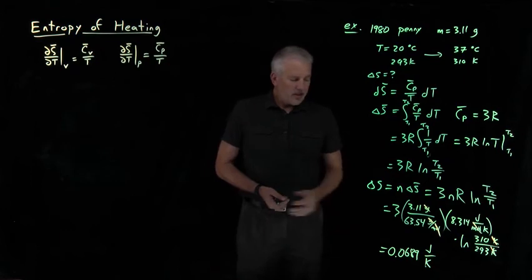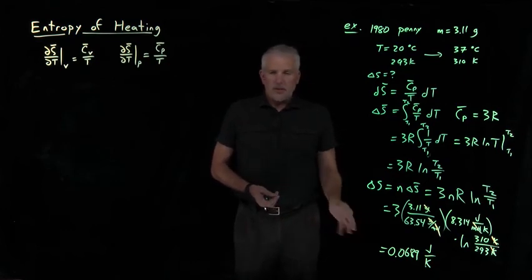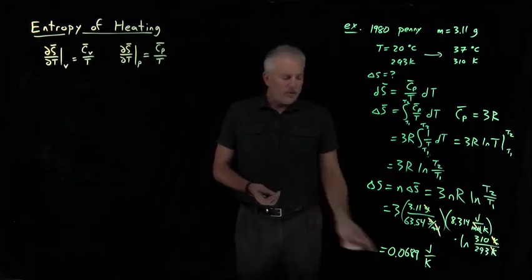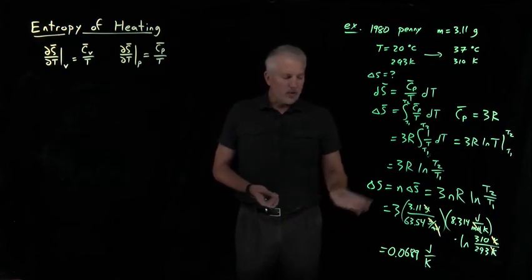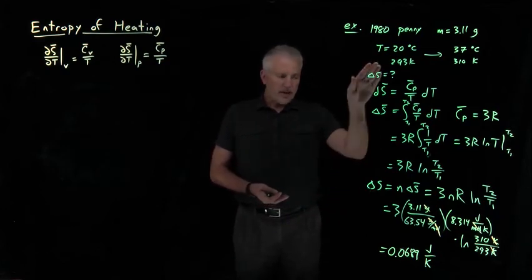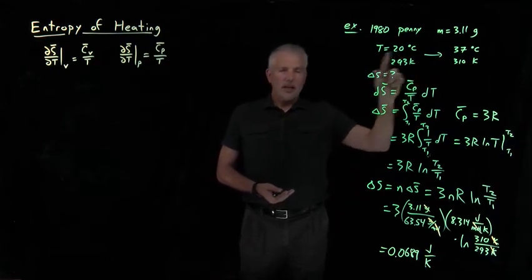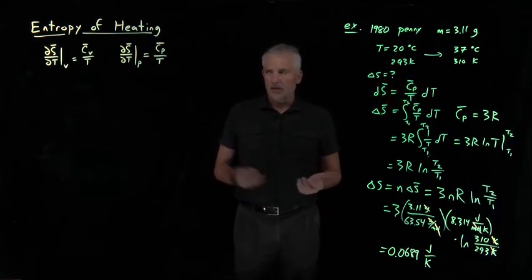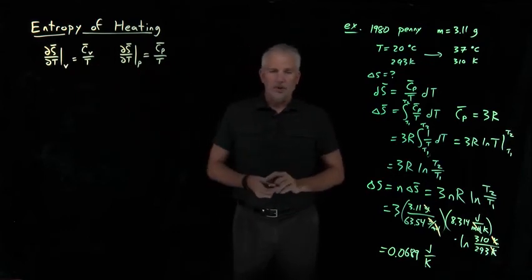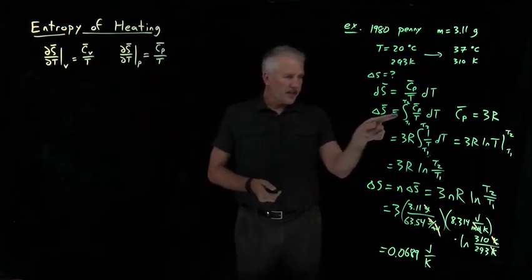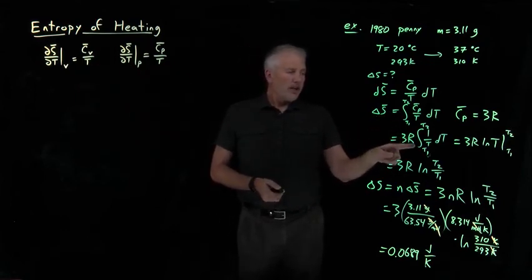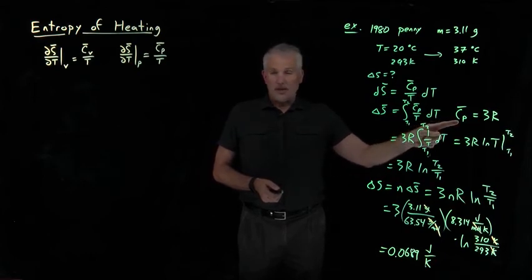So maybe that's not a tremendously satisfying answer because we don't have a very good intuitive grasp of what a joule per Kelvin is or what a large or small quantity of entropy is, but at least we have a method now of calculating the change in entropy for some object that's heating up or cooling down at either constant volume or at constant pressure. In this case, specifically, when I was able to assume that the heat capacity was constant.